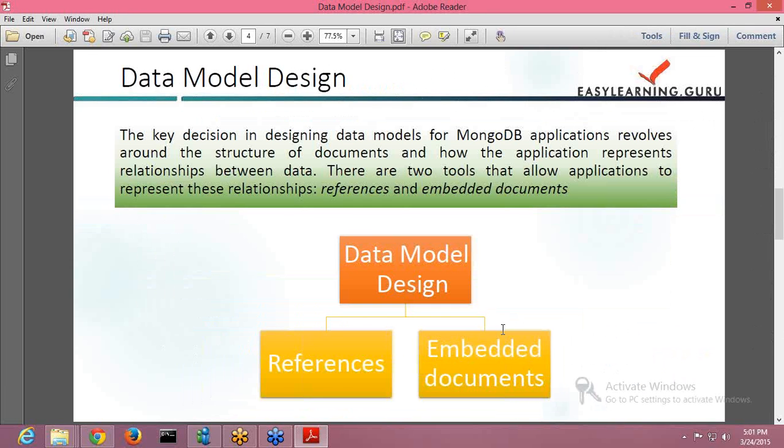So now the data model design. The key decision for designing the data model for MongoDB applications revolves around the structure of the documents and how the application represents the relationship between your data. You have to see how your data is kept, how you want to structure it, how you want your application to represent your data, and how the relationships between the data are. You have to take all these things into consideration and then decide what kind of data model you actually want.